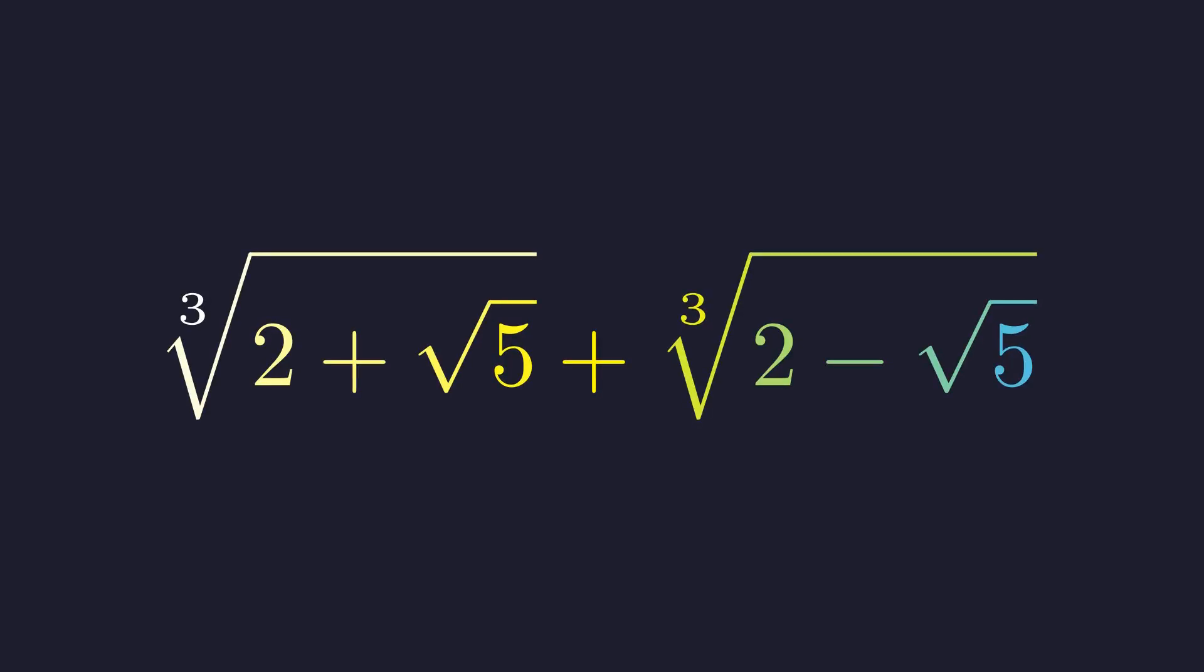This expression looks impossible to simplify. Cube roots nested with square roots. But what if I told you this whole thing collapses down to a single integer?